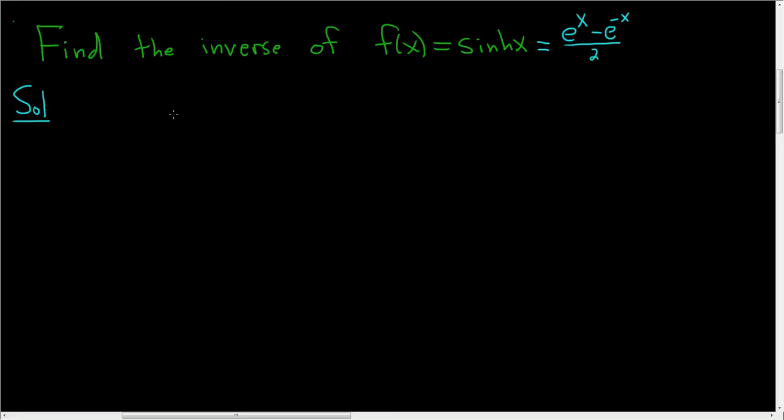So whenever you're finding the inverse, if you think back to your math classes, the first step is you call it y. So y equals sinh(x). That's step one. And then in step two you switch your x and y, so x equals sinh(y). And then in step three you actually have to solve for y, and that's where the bulk of the work comes into play in this problem.